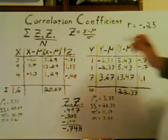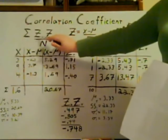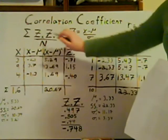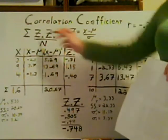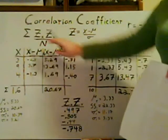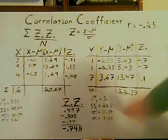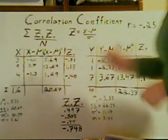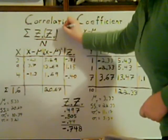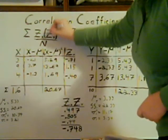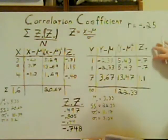Now here's where it gets tricky. This is the formula for the correlation coefficient: sigma of z of x times z of y, divided by n. We've got z of x and we've got z of y. People often get confused by how this formula is set up, so let me make it simpler. It's the same as if there were a pair of parentheses — all you really have to do is take each z of x times its respective z of y.